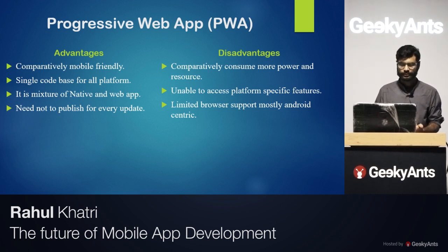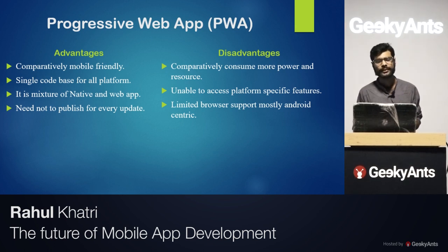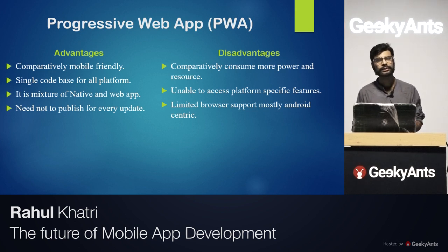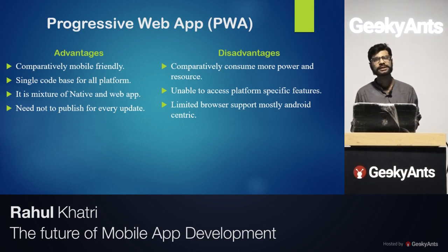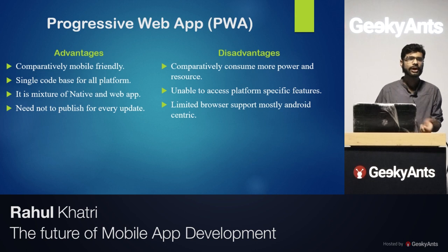PWAs extend websites by making them look and feel like an app. When you visit a PWA website, it automatically creates a shortcut on your home screen that looks like an app. You click it just like an app and access the website. PWAs also work with limited internet because they preload information and run up to a certain limit, unlike regular web apps.